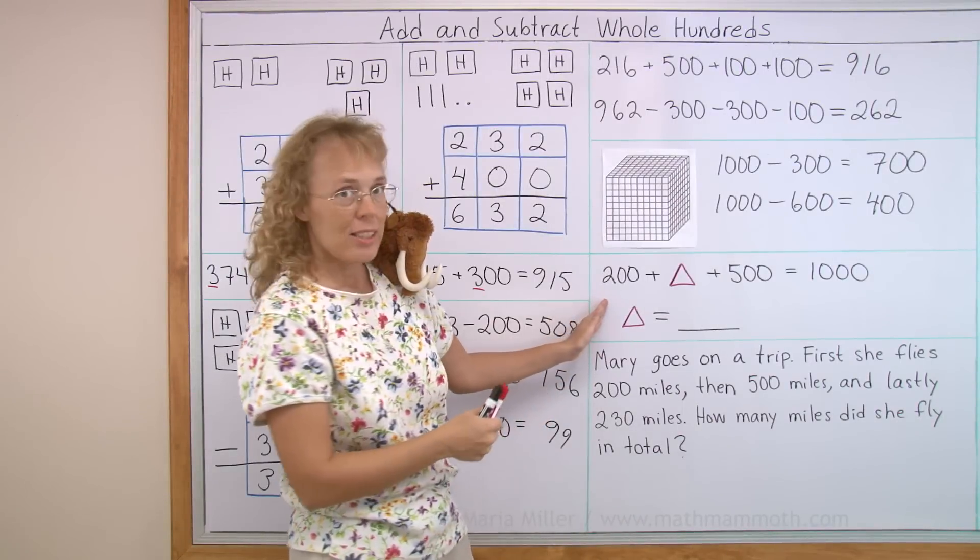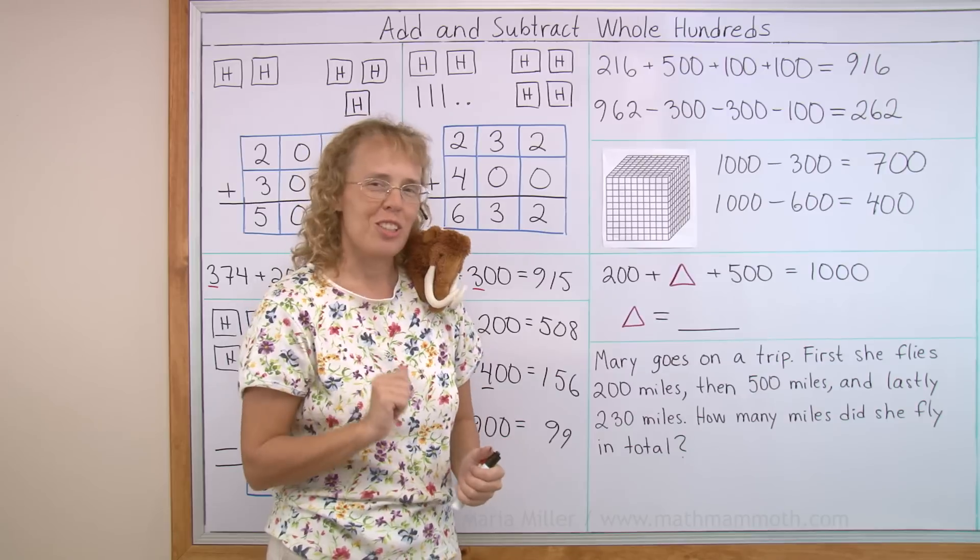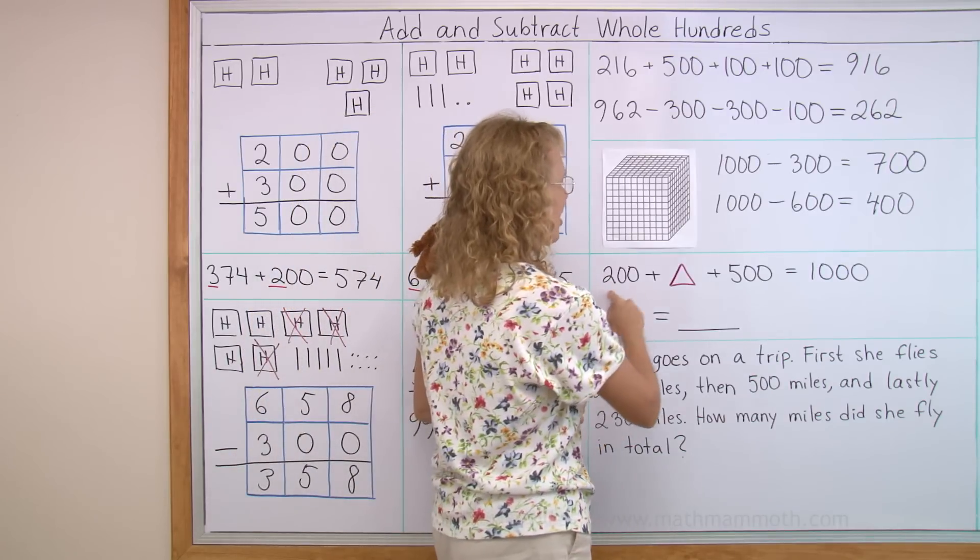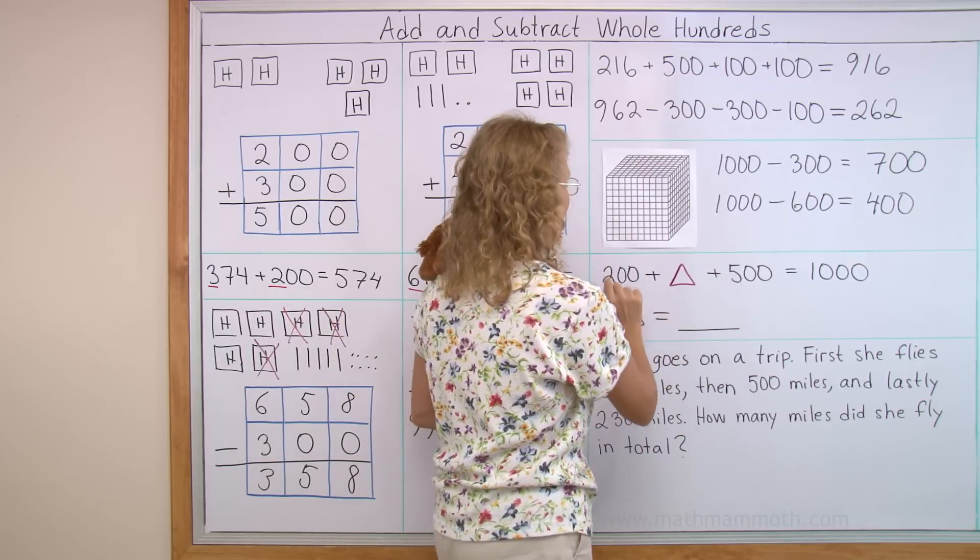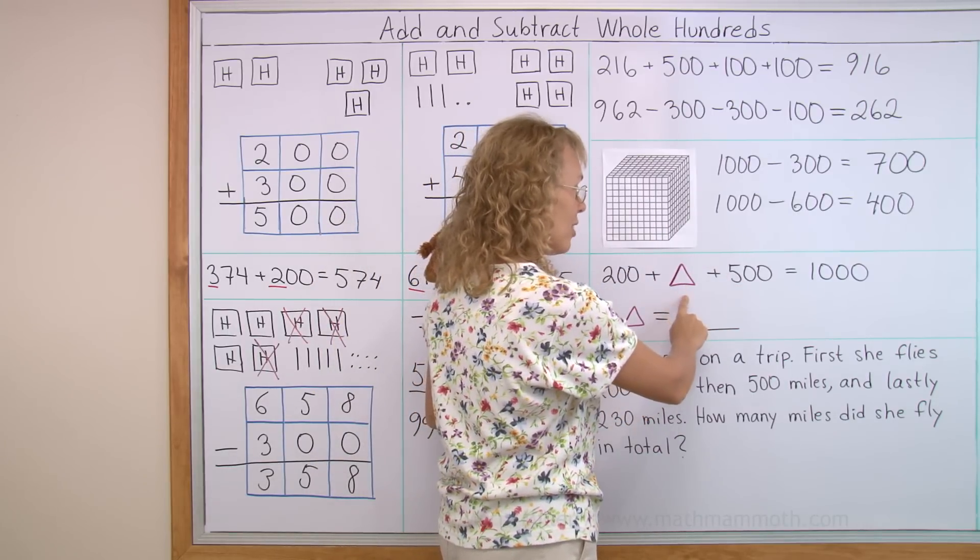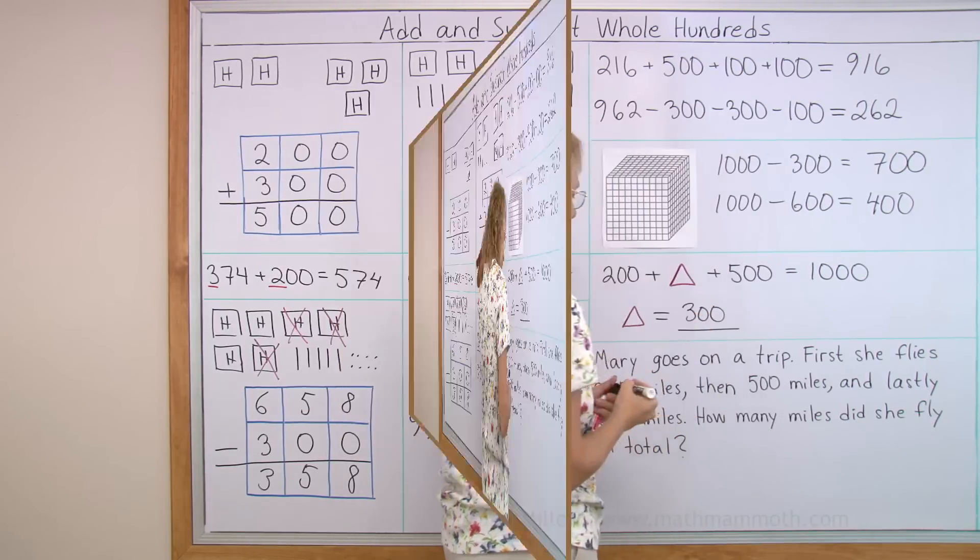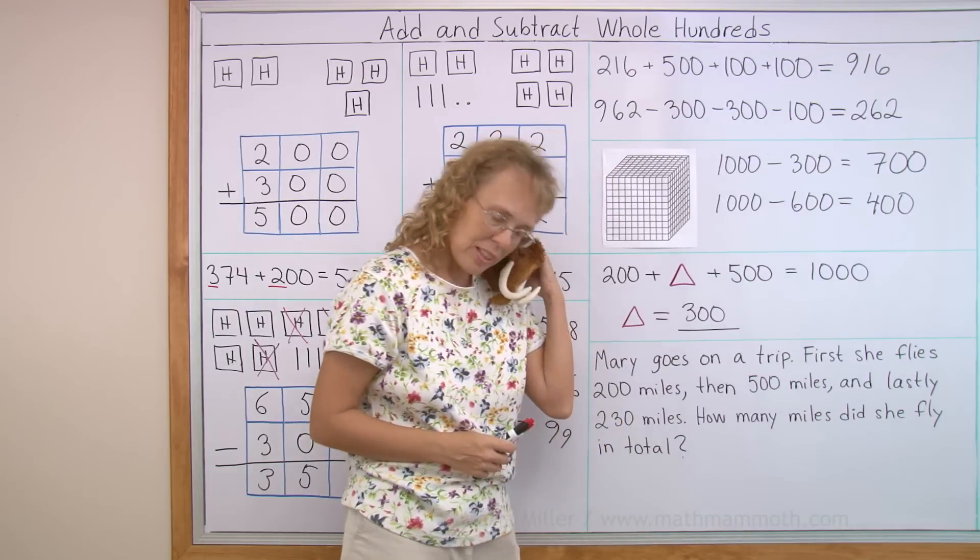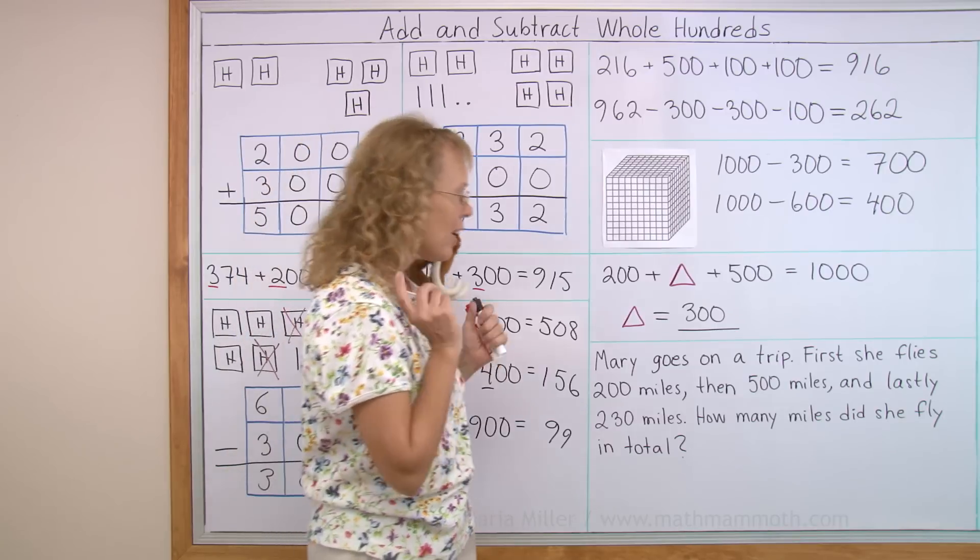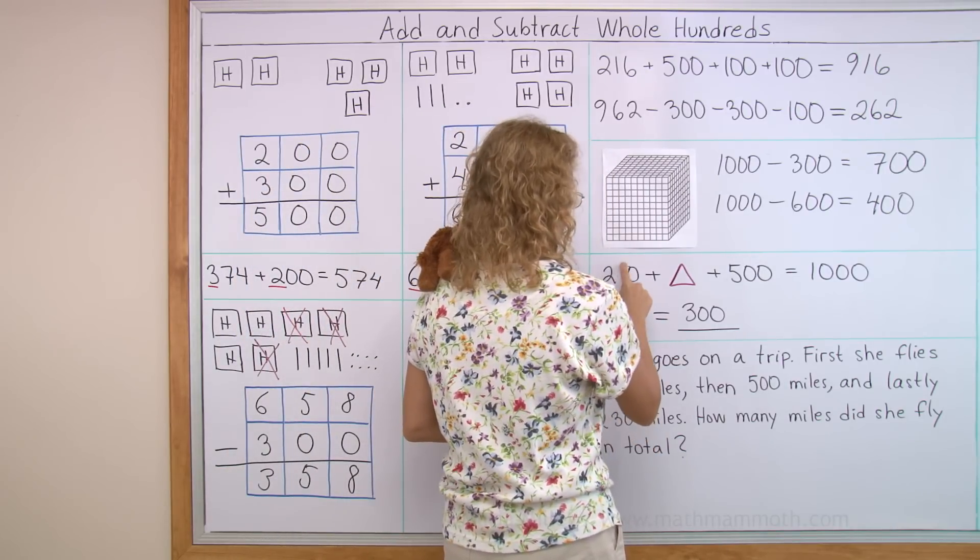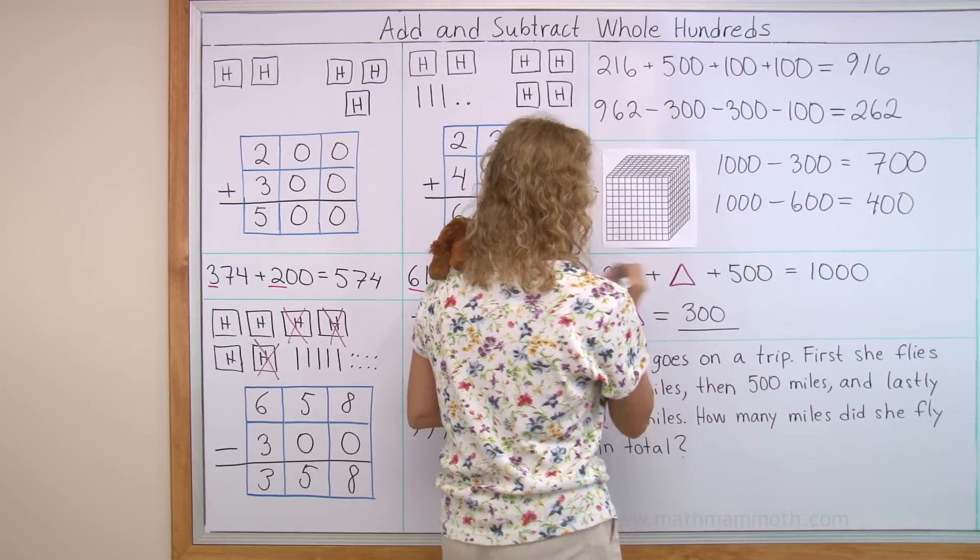Still easy. But here's a little bit of a puzzle. 200 plus a triangle plus 500 equals 1000. Surely you can solve it. Here's 200 and 500. And they make together 700. So to 700, we have to add how many hundred to get 10 hundred. The answer is 300. Too easy, Matthew says. Can I make you a new problem? I'll make Matthew a new problem.